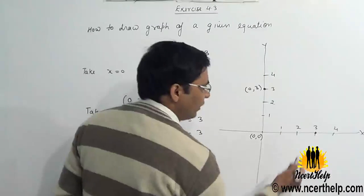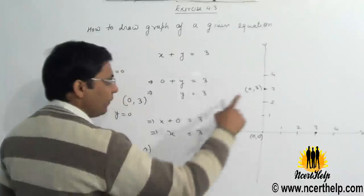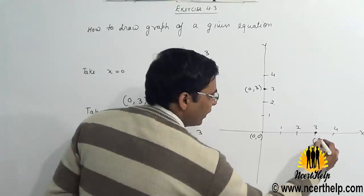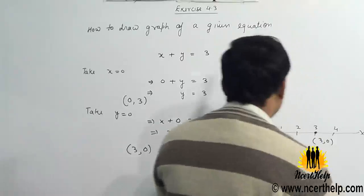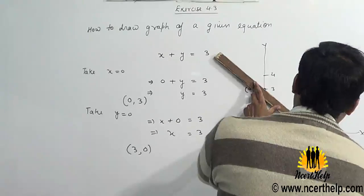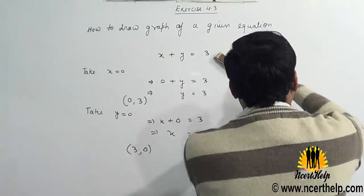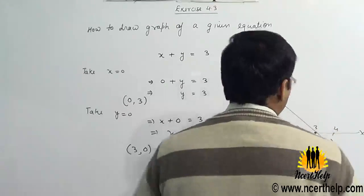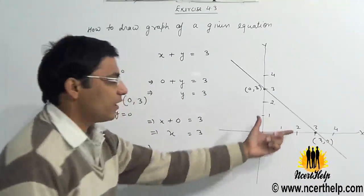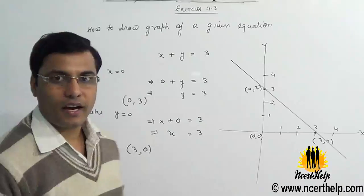So these are two points. First is 0 comma 3, second is 3 comma 0. Now draw a straight line with help of these. This is the graphical representation of this equation.